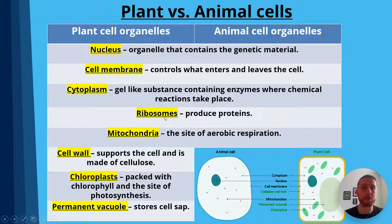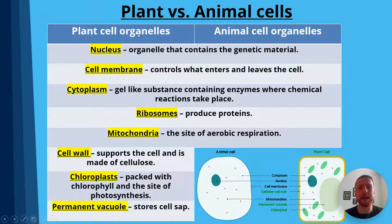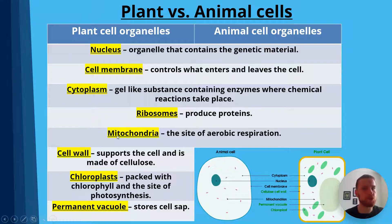Next, we have ribosomes, and ribosomes produce proteins. The ribosomes are quite a small organelle — think of an organelle as like a little organ; it's a small part within a cell. Finally, they both have mitochondria. So both animal cells and plant cells have mitochondria, and this is the site of aerobic respiration.